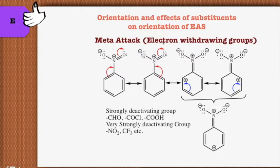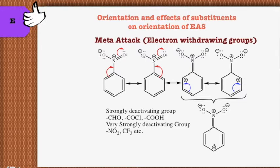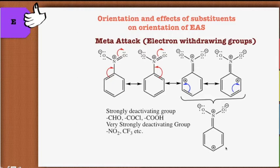Meta attack is generally shown by electron-withdrawing groups. For example, in nitrobenzene, the nitro group is an electron-withdrawing group due to its polar nature and the minus inductive effect of oxygen. By its inductive effect it pulls the ring electrons, creating electron deficiency at the ortho and para positions, so the incoming electrophile attacks at the meta position. These electron-withdrawing groups are divided into strongly deactivating groups — such as aldehydes, acyl chlorides, and carboxylic acids — and very strongly deactivating groups such as nitro and trifluoromethyl groups.